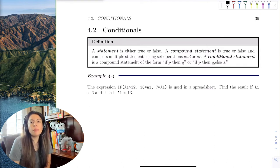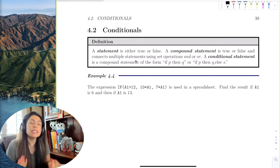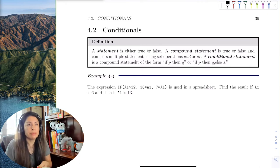So we'll talk about a compound statement first, which combines two statements that are either true or false into one statement by a connective. And then a conditional statement, which gives you a condition in order for the result to be true.